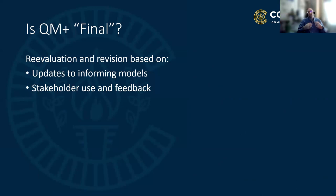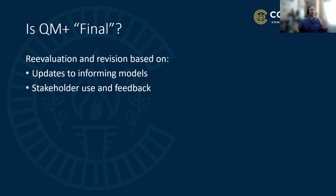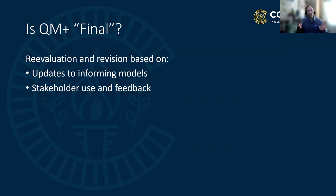Now we're talking about the Quality Matters Plus—is it truly final? No. It's kind of like medicine: it's a practice, always changing, always moving forward. Quality Matters usually revises the rubric every four to five years; other models revise based on trends, stakeholder feedback, and similar factors. Quality Matters Plus and the Healthy Course Checklist went through focus group stages and receive feedback each time they're used. We want to make sure our instructors, administration, and students all have a voice in this model so we can continuously improve. Ten years from now, using the same document will not work.